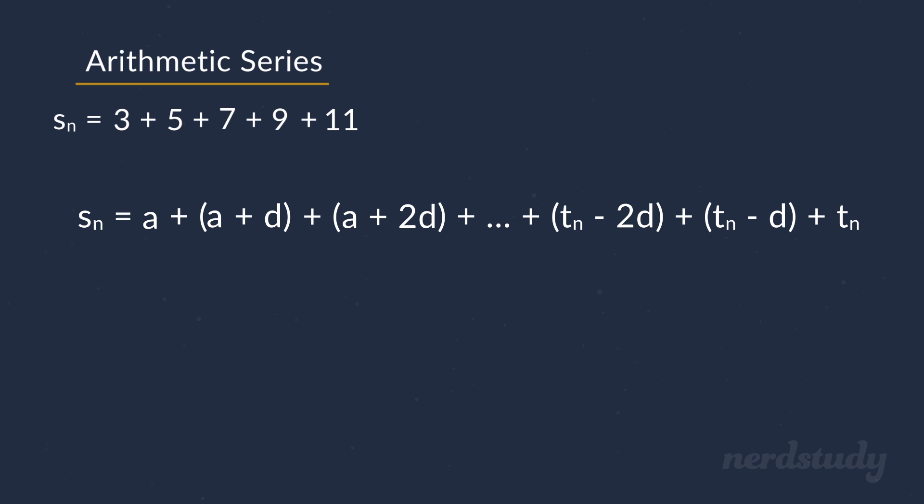until we get to the second last term, which would be this last term minus the difference. In this case, it's 11 minus 2, giving us the 9 that we have here. And finally, our last term being 11 in this example.